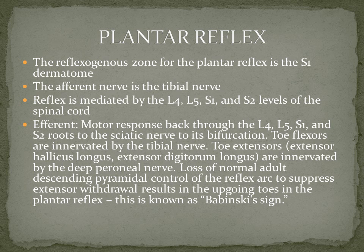Once the afferent impulses enter these levels of the spinal cord, the efferent motor response travels back through the L4, L5, S1, and S2 roots in the sciatic nerve all the way down to its bifurcation behind the knee, where it bifurcates into the tibial nerve and the deep peroneal nerve. The toe flexors are innervated by the tibial nerve, while the toe extensors — such as extensor hallucis longus and extensor digitorum longus — are innervated by the deep peroneal nerve.